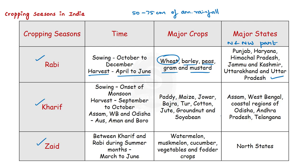Kharif crops are grown with the onset of monsoon in different parts of the country and are harvested in September-October. Important crops grown during kharif season are paddy, maize, jowar, bajra, tur, moong, urad, cotton, jute, groundnut and soya bean.